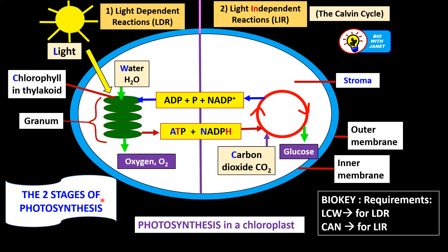Here is an overview of the stages of photosynthesis. There are two stages. The first stage is the light-dependent reaction, occurring in the thylakoids in the chloroplast — it requires light for the reaction. The second stage is the light-independent reaction, also called the Calvin cycle — it does not require light but needs the substances produced by the light-dependent reaction. So let's talk about what is needed for the light-dependent reaction: sunlight, chlorophyll in the thylakoids, and water.